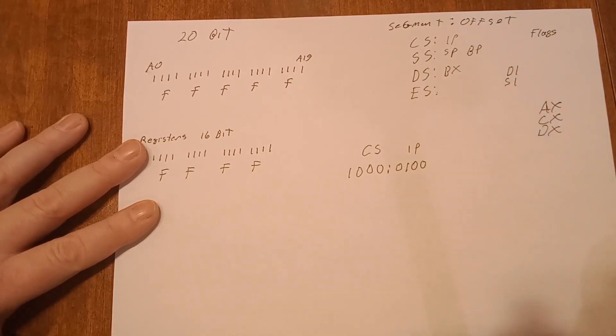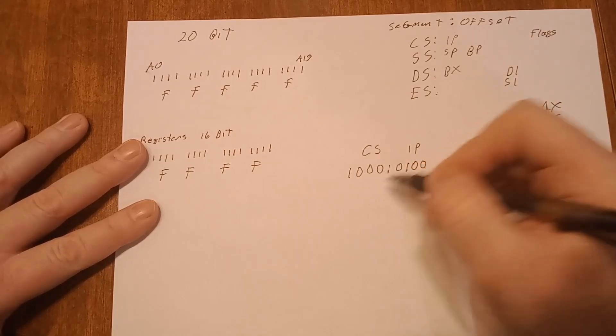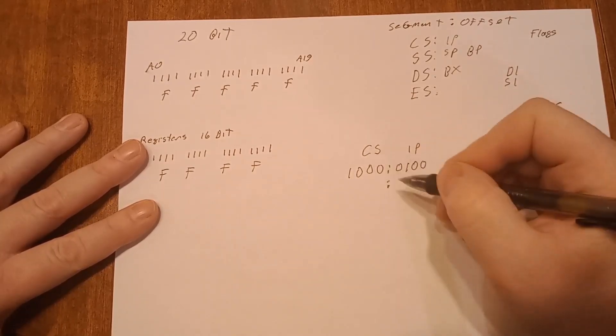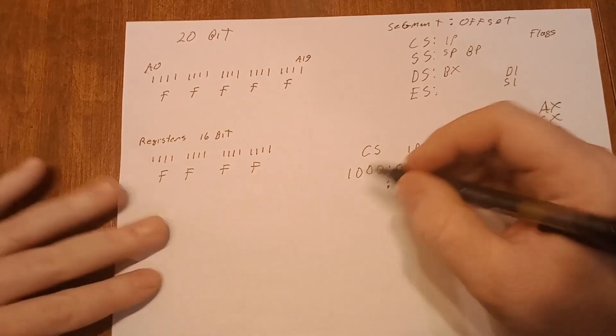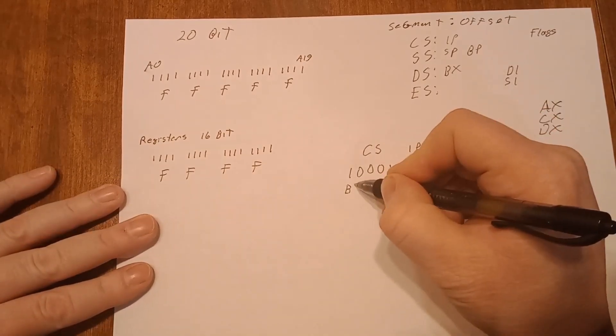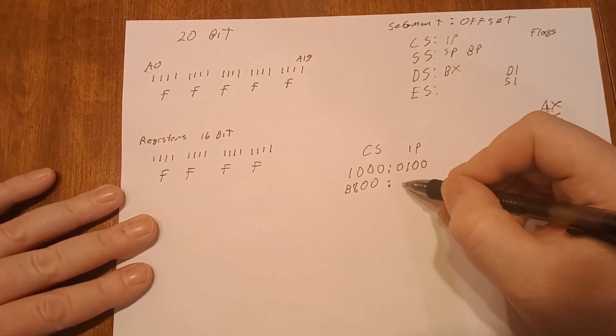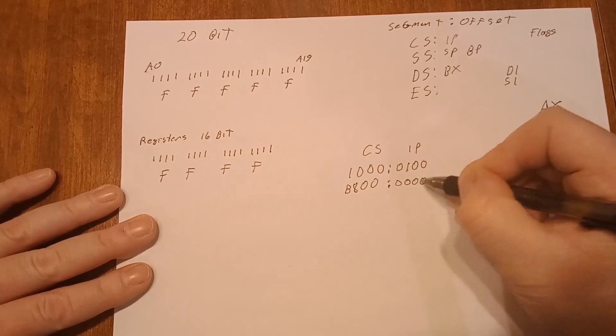So that's how it would be written out. Let's throw in some letters so that you realize it's hexadecimal. So let's do your video segment, which is typically for text is B eight zero zero and we'll just go zero zero zero.